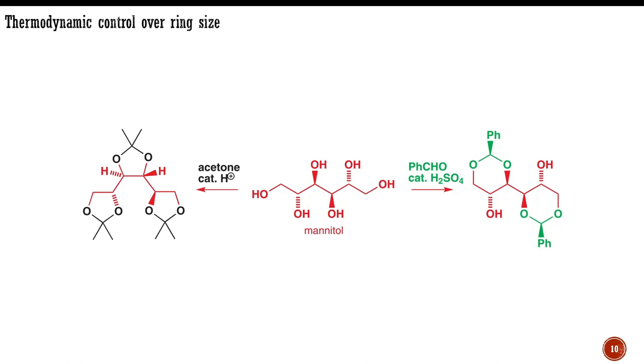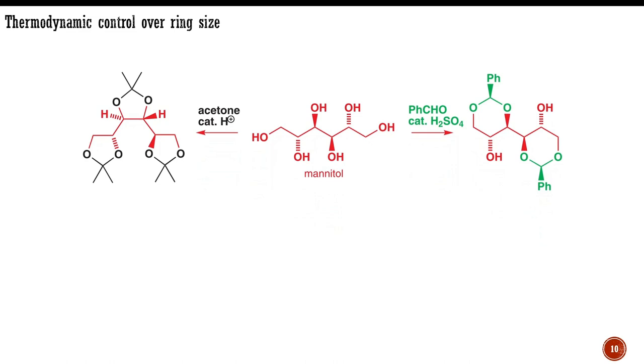Both of them give acetals from the same starting material, mannitol. The important thing is that acetone reacts with mannitol to form three five-membered acetals while benzaldehyde forms only two six-membered acetals. This is quite a common result. When there is a choice, acetone prefers to react across a 1,2-diol to give a five-membered acetal, while aldehydes prefer to react across a 1,3-diol to form a six-membered acetal.